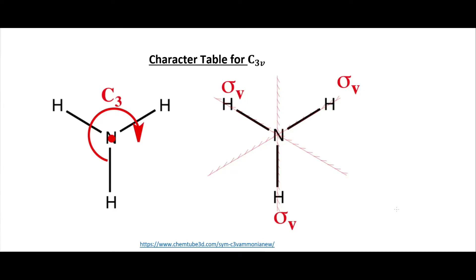In this video I'm going to talk about the character table for the C3V point group, which the ammonia molecule is an example of. We're doing this even after already showing how to derive the irreducible representations and character table for C2V last time because we will end up with something a little bit different — and that's the main thrust of this video.